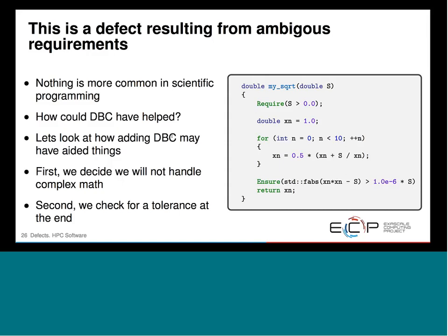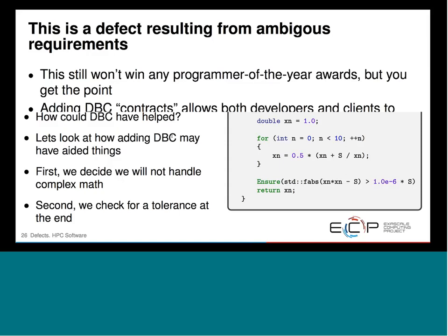Second, I'm going to check for a tolerance. I've decided I only want to solve this to a tolerance of 1e-6. So I'm ensuring at the end of this calculation that it's going to be within 1e-6.